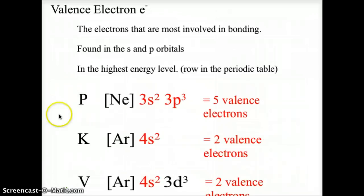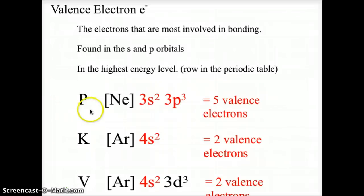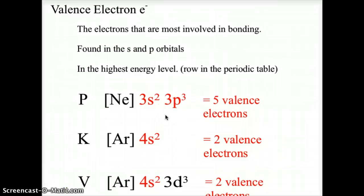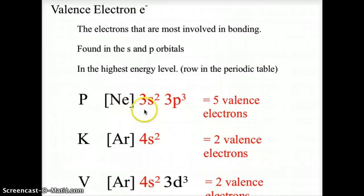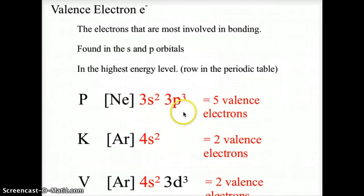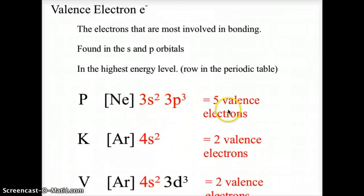It's easiest if we use the core notation or noble gas notation. Here we can see definitely the s and p orbitals of the highest energy level. So for phosphorus, we use the noble gas neon, followed by 3s2, 3p3. The s2 and the p3 gives us five valence electrons.